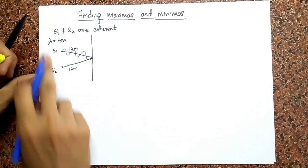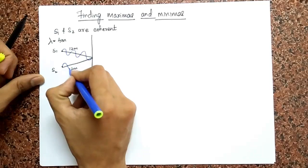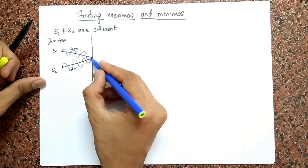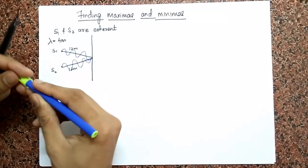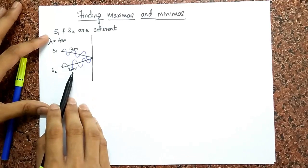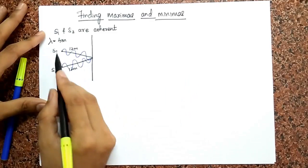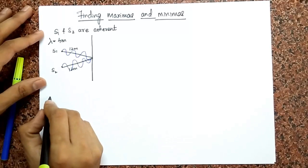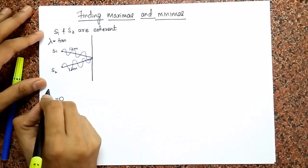Since S2 is coherent with S1, and S1 is cresting, S2 is also cresting. So S2 also crests and ends up having three waves. When they meet at that point, you see crest on crest — they are going to constructively interfere. So if the path difference is zero, I get constructive interference.